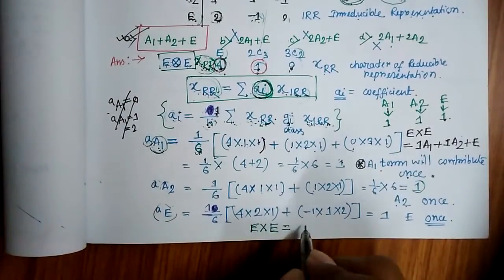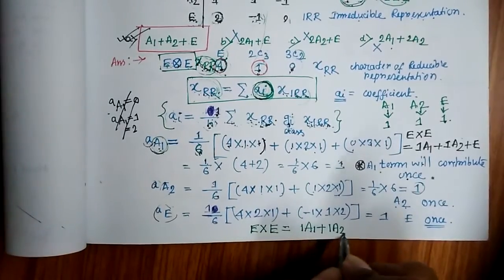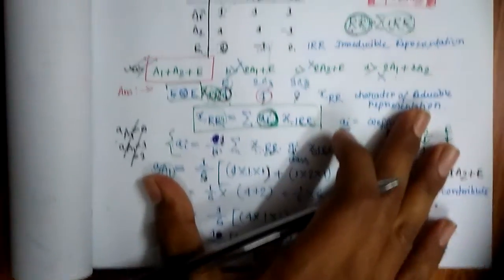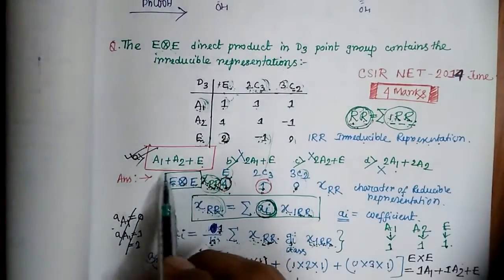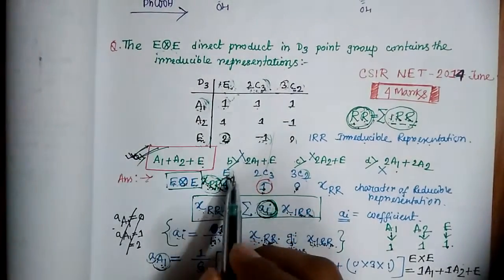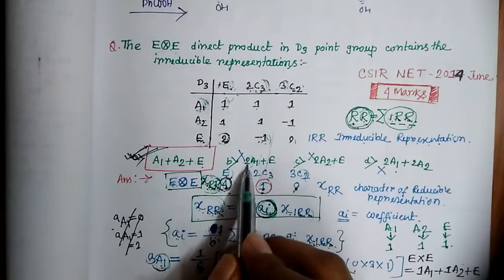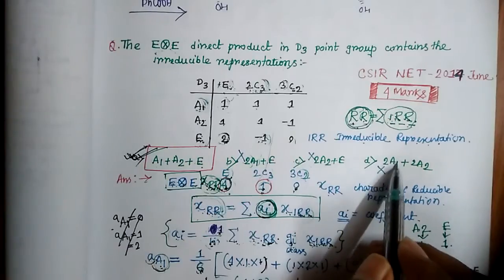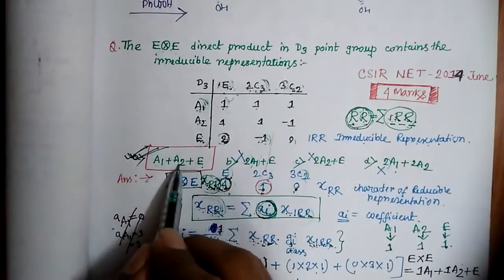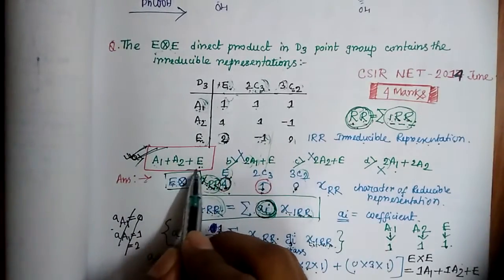Therefore, E × E = 1·A1 + 1·A2 + 1·E. Matching with the answer choices, the correct answer is A1 + A2 + E. Option with coefficient 2 for A1 is wrong since we found it to be 1. Options missing A1 or having A1 coefficient of 2 are also incorrect. The answer is A1 + A2 + E.